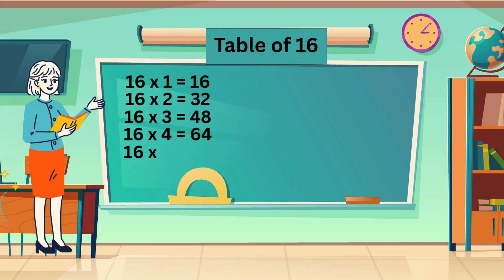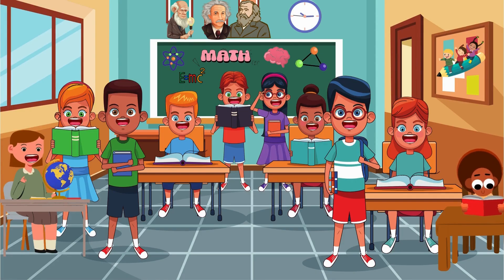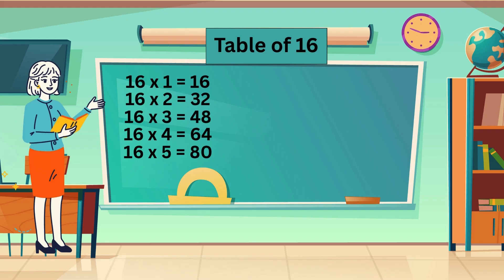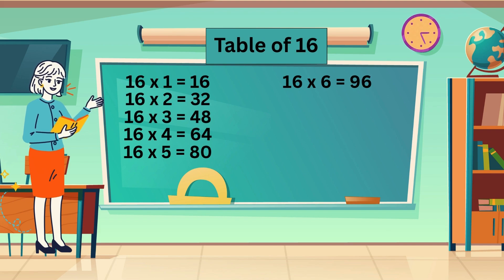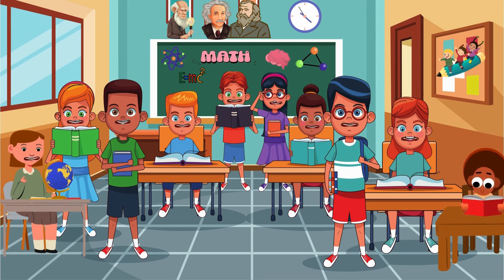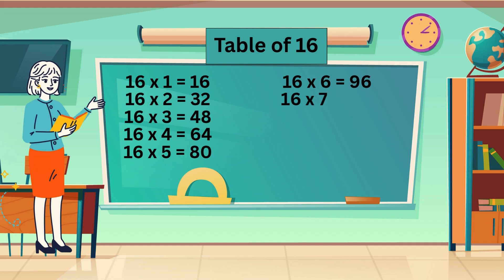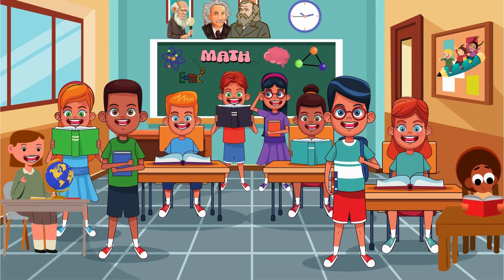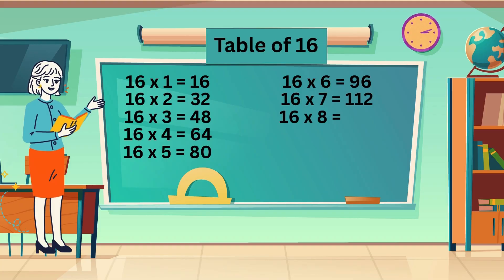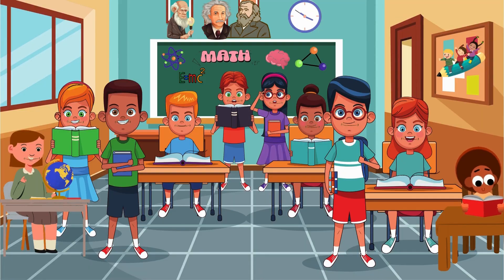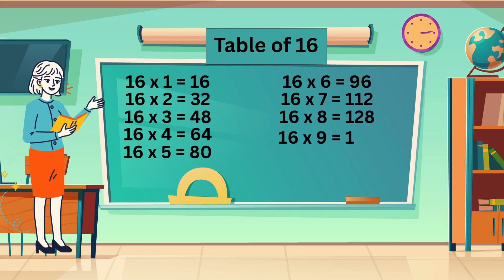16 fives are 80. 16 sixes are 96. 16 sevens are 112. 16 eights are 128. 16 nines are 144. 16 tens are 160.